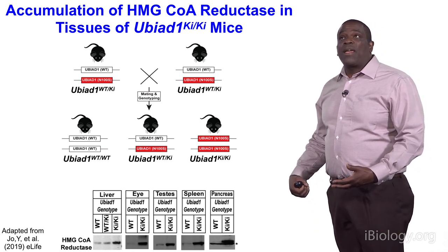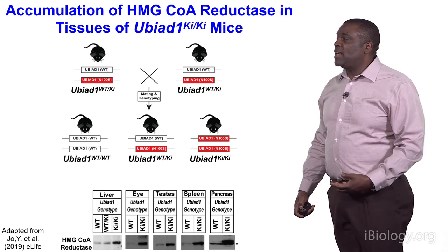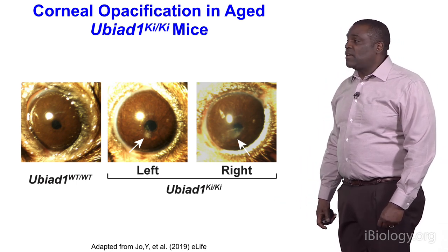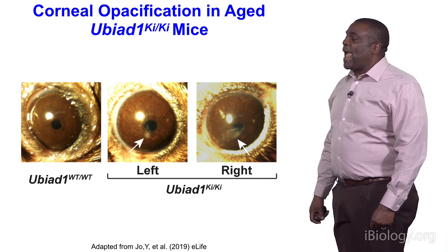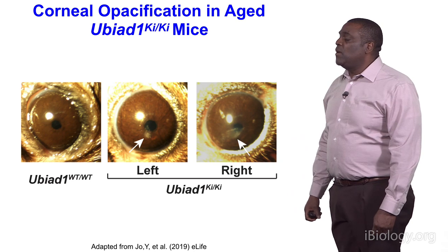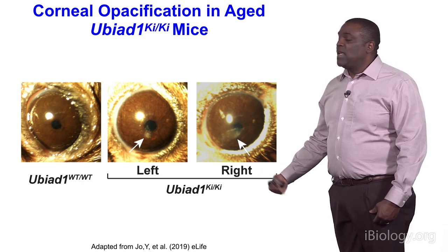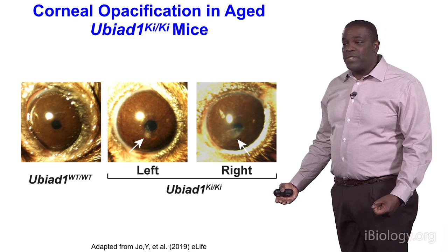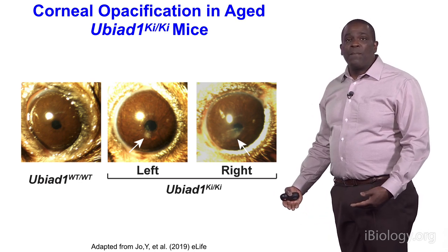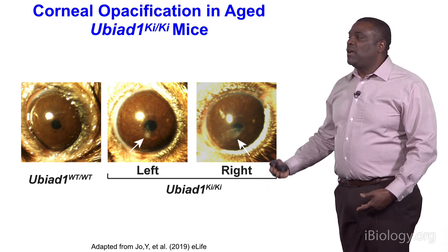Our next question was whether this block in reductase ERAD contributes to corneal opacification seen in human SCD patients. Analysis of eyes from wild-type or UBIAD1 knock-in mice after approximately 50 weeks of aging revealed signs of corneal opacification in both left and right eyes of knock-in animals. The corneas of these animals not only exhibit opacification, but also markedly accumulate HMG-CoA reductase protein, have increased cholesterol, and show increased expression of genes required for cholesterol transport — all hallmarks of sterol overaccumulation.